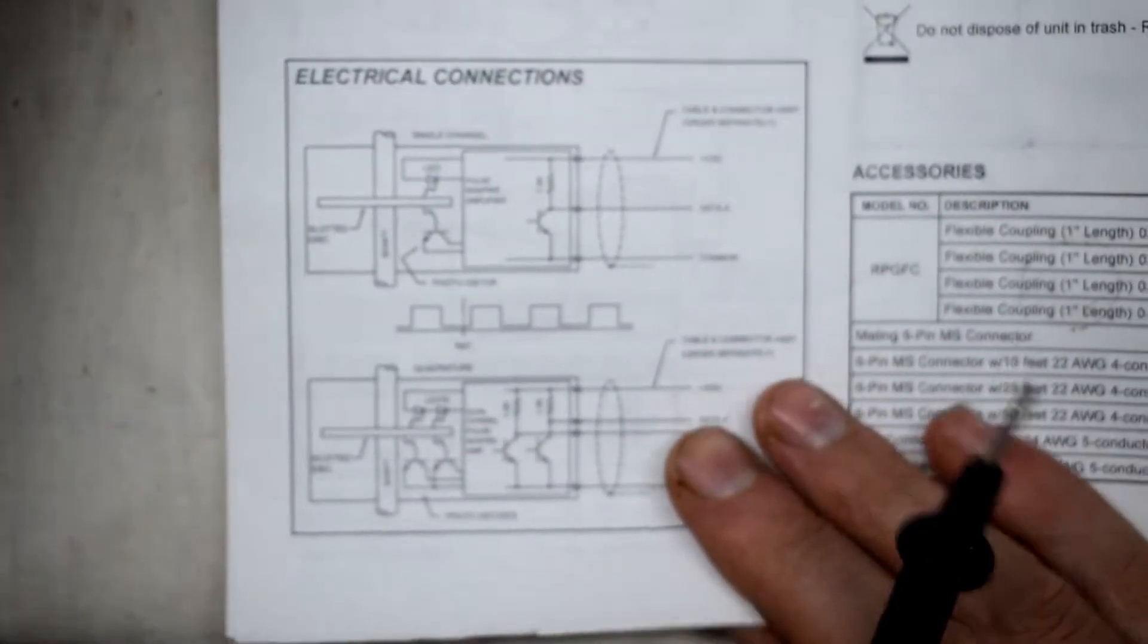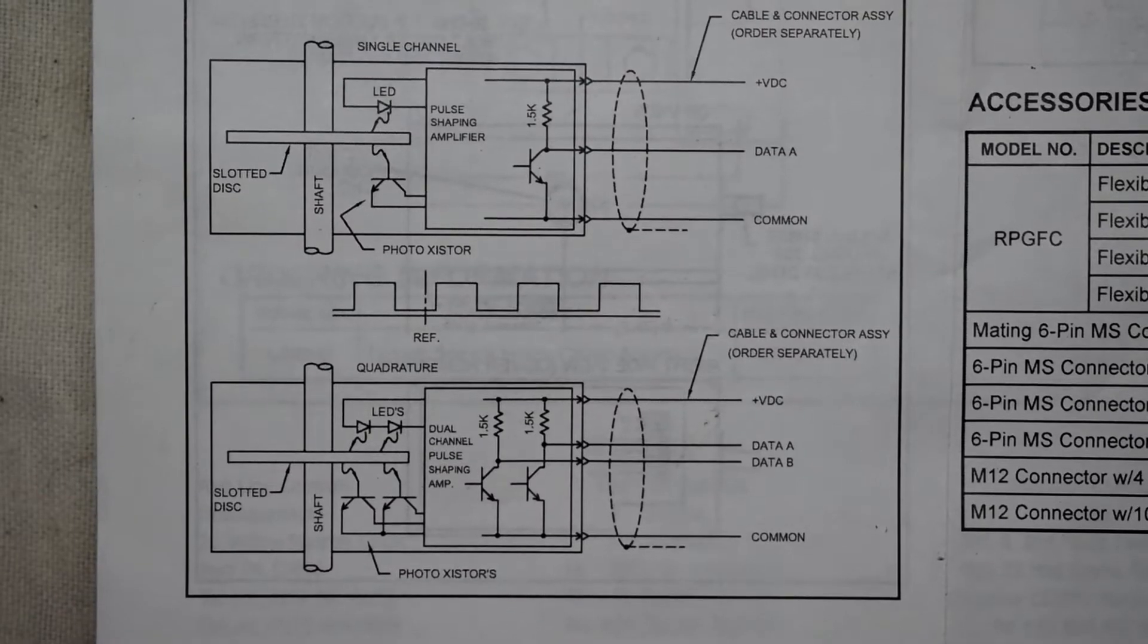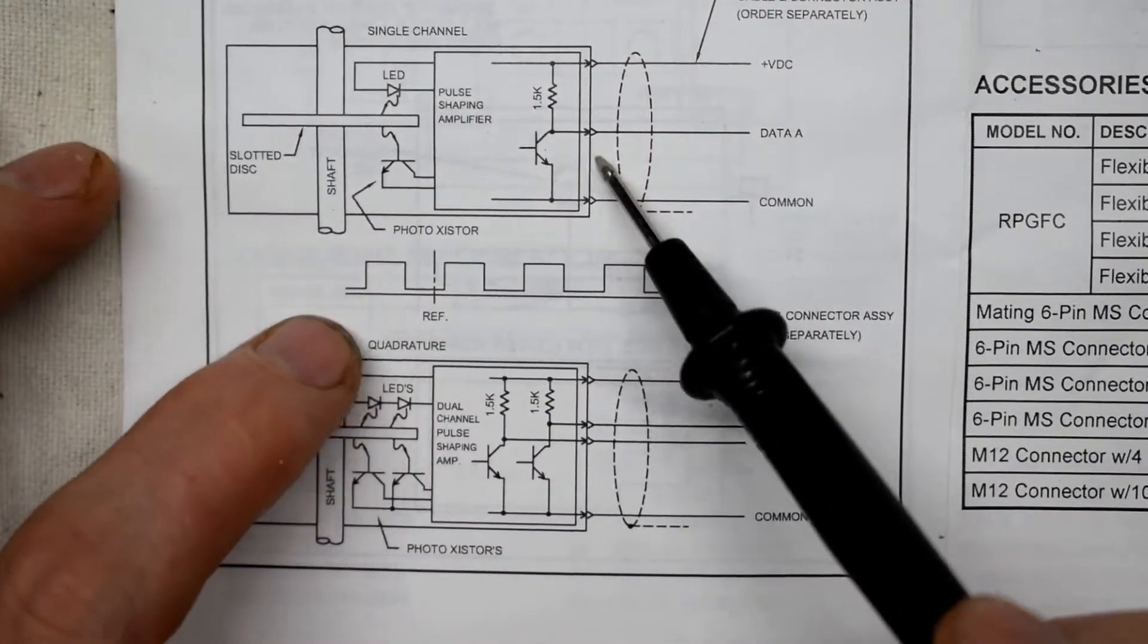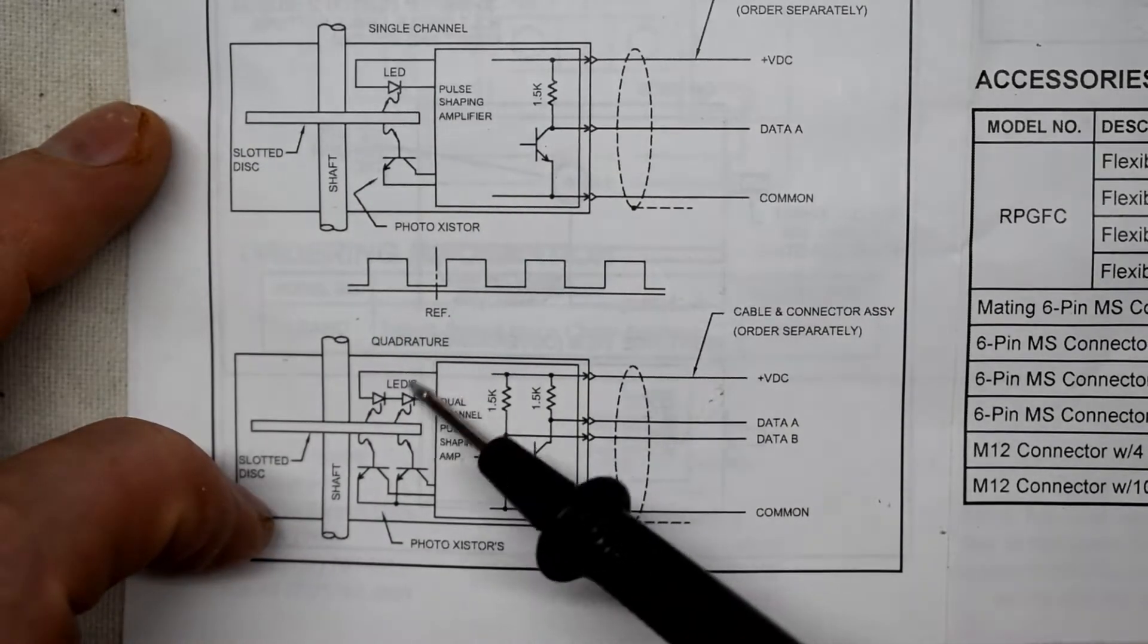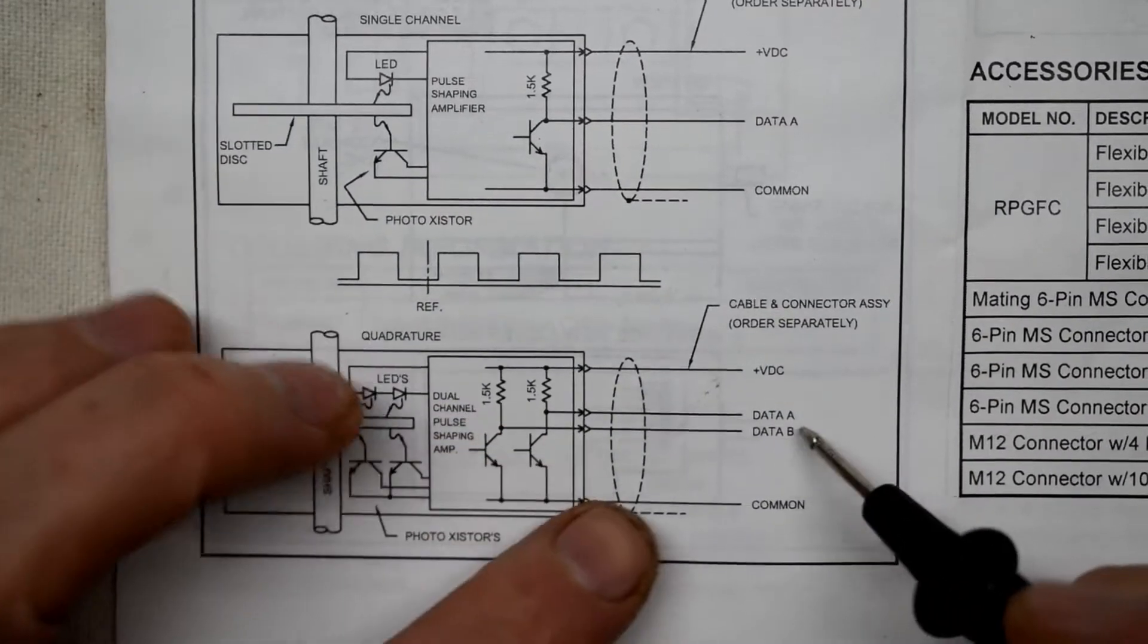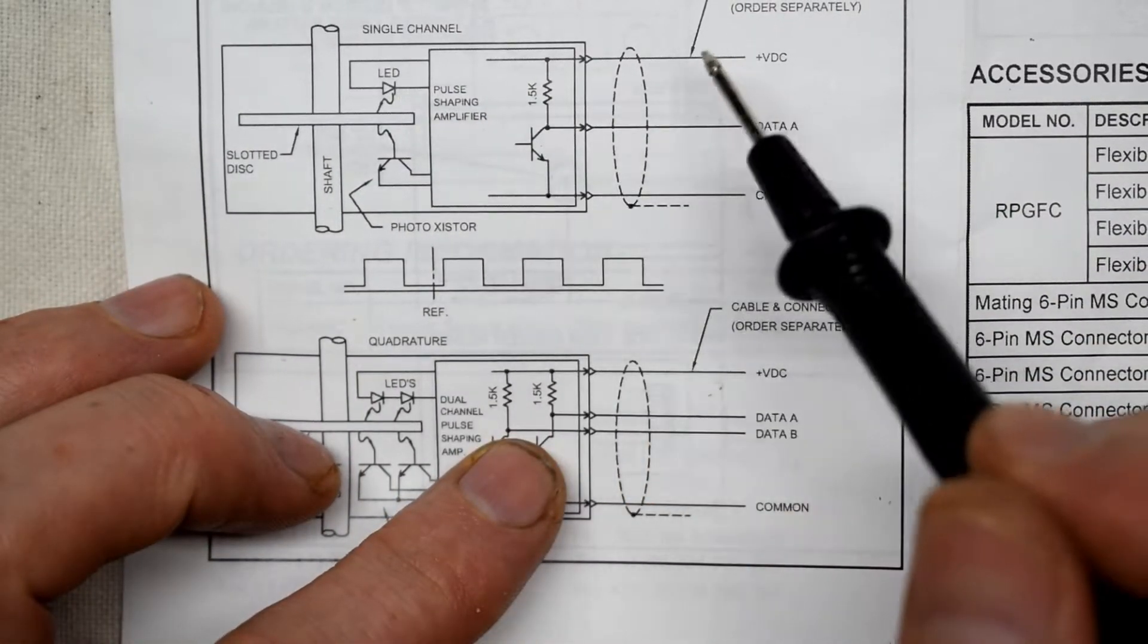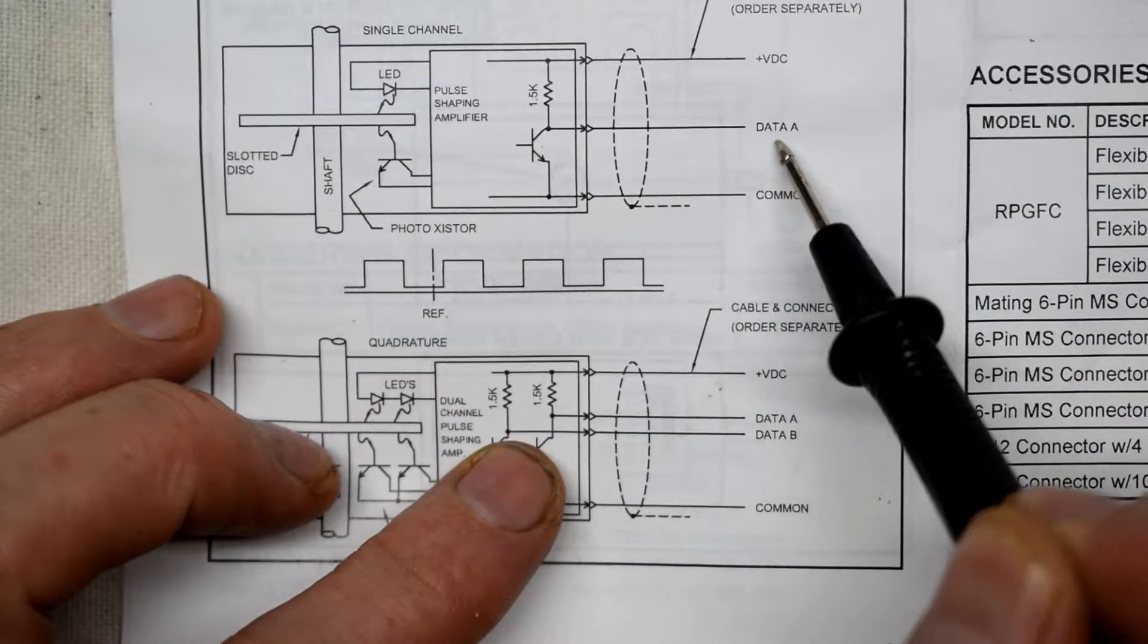Here's the schematic. Here's the internal schematic. There are two types. There are encoders with one LED or two LEDs. If you have two LEDs then you can have two data lines. Ours just has one LED so it only has data line A.